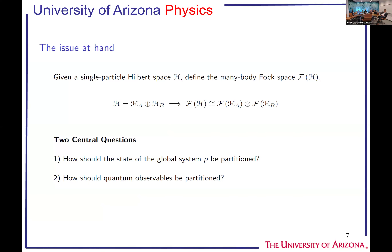A little bit of formalism: we're faced with a Hilbert space divided between a system A and an environment B. When doing many-body physics, you typically work in Fock space rather than just in Hilbert space. So we need to construct a Fock space on this union of Hilbert spaces of system and environment. The questions that arise are: how should the density matrix describing the quantum statistics in this global Fock space be partitioned, and how should quantum observables — the operators — be partitioned?